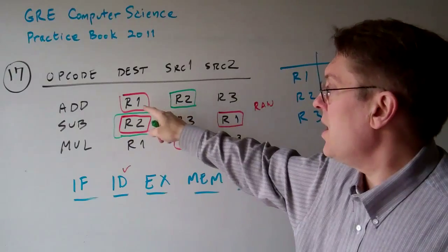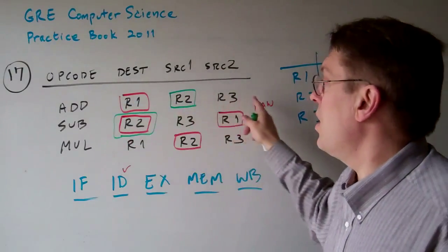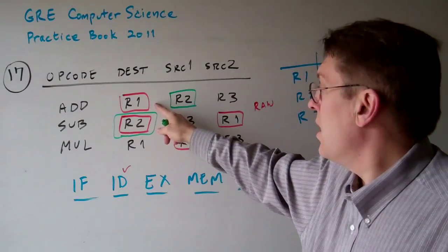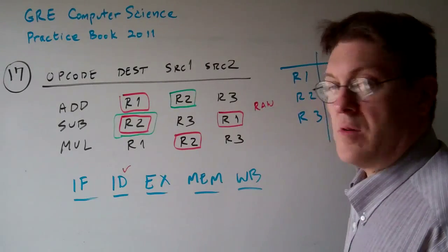If instruction 1 is writing register 1, it's also going to read it in the next instruction. That's a RAW hazard.